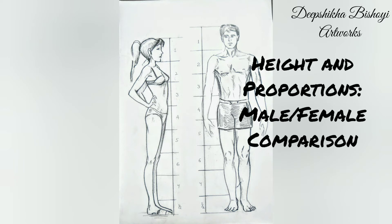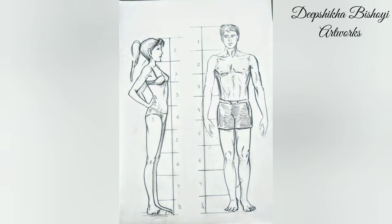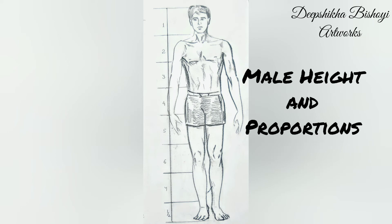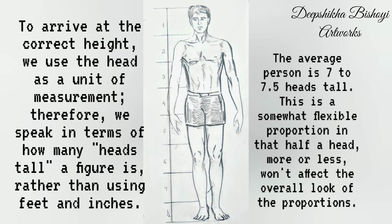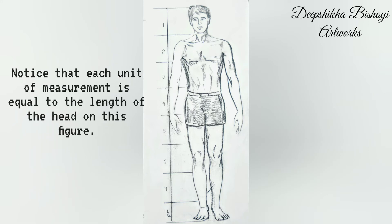Now let's look at height and proportions in a male-female comparison. This entire section will give you a solid foundation for drawing the body. We'll establish the framework proportions and then work our way down to specific sections of the body, limbs, and muscle groups. This approach is excellent for most types of drawing — progress from the general to the specific. For the male figure, to arrive at the correct height we use the head as a unit of measurement. We speak in terms of how many heads tall a figure is rather than using feet and inches. The average person is seven to seven and a half heads tall, and each unit of measurement equals the length of the head.